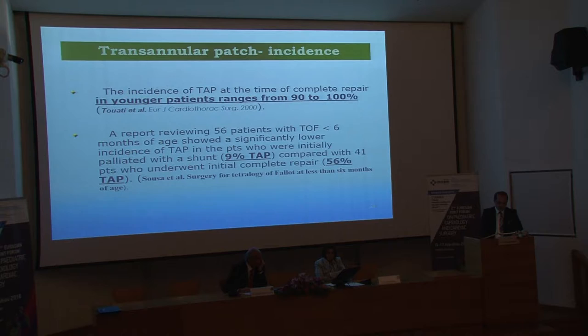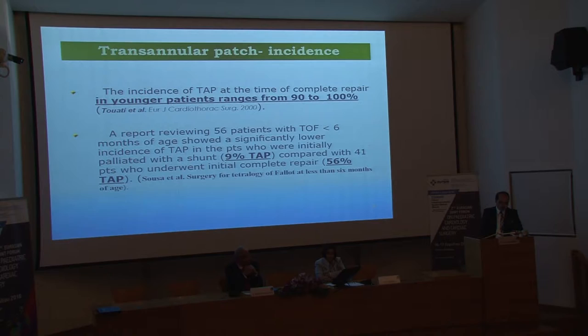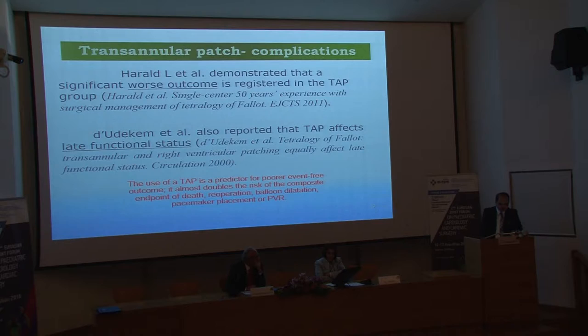Studies have reported that the younger the patient, the higher the incidence of transannular patch at the time of complete repair. Moreover, a report reviewing 56 patients less than 6 months of age showed a significantly lower incidence of TAP in patients who were initially palliated with a shunt compared with patients who underwent initial complete repair. Overall, studies summarize that the use of TAP is a predictor of poor event-free outcomes. It almost doubles the risk of the composite endpoint of death, re-operation, balloon dilatation, pacemaker replacement, or pulmonary valve regurgitation.